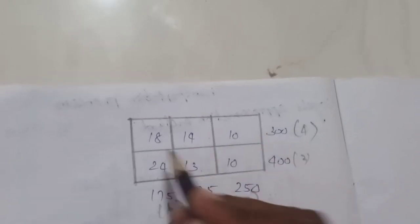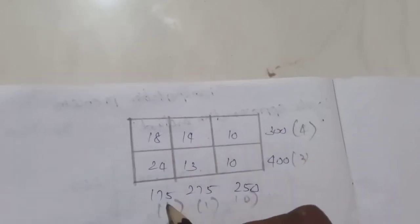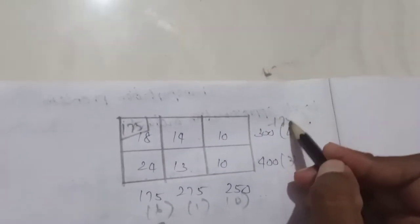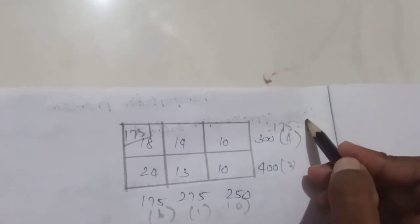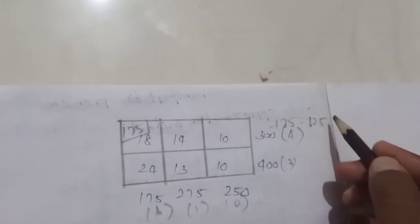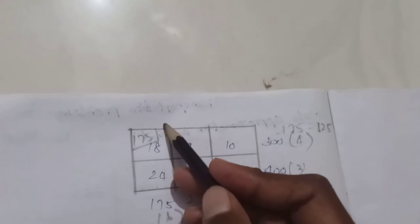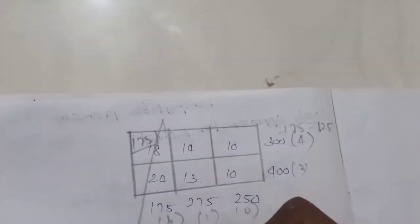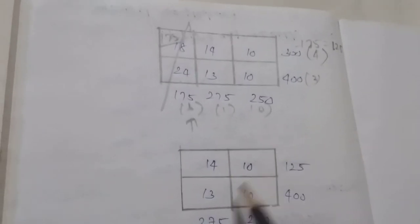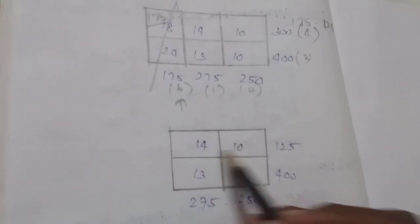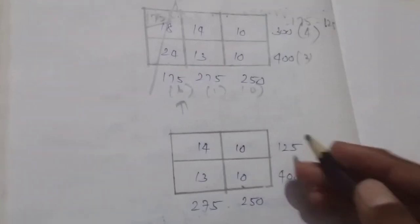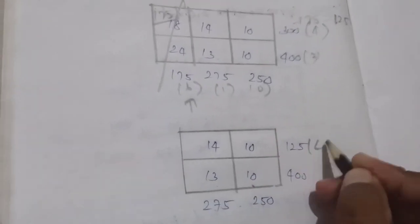The corresponding row has values 3 and 175. The minimum number is 1 and here the allocation is 175. Here is 175, here is 125. We perform the allocation of 125. Here we see 14 minus 10 and 13 minus 10 for the row penalties in this iteration.